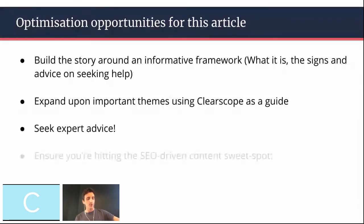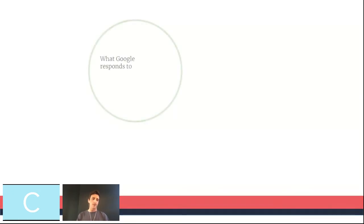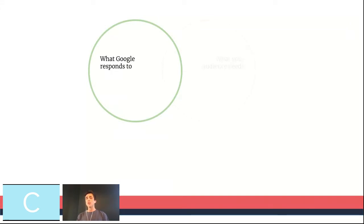Ensure you're hitting the SEO-driven content sweet spot. I'm probably preaching to the choir here, but I thought it would be worth a mention because we use this framework to drive all of our content and topic ideation. Content must, first of all, tick Google's boxes — what has it deemed the most relevant topics, subtopics, content in a particular space for a particular keyword? Use that as a guide for what to include in your content. But most importantly, make sure you're covering what your audience needs, what they want, and what is going to delight them. Do this by making your content original, bringing in other experts, and injecting your own experiences.